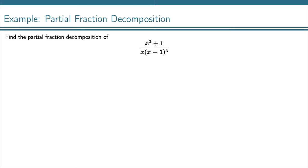Here we have a rational function, and our denominator is already factored for us. You'll notice that this x minus 1 factor has an exponent of 3, and that's going to affect how we set up the partial fraction decomposition.